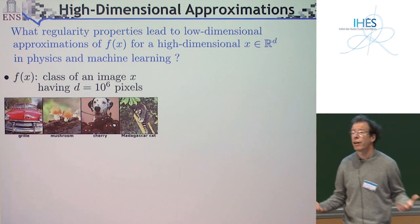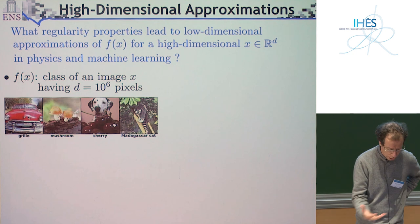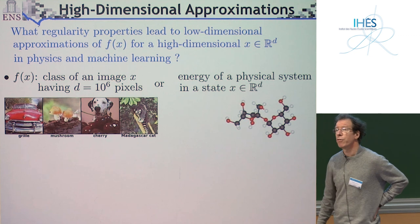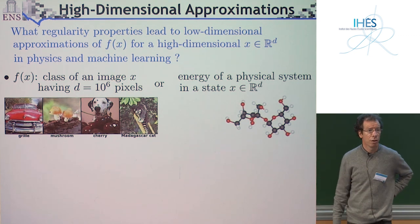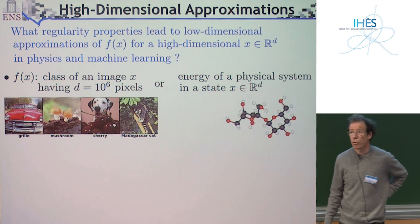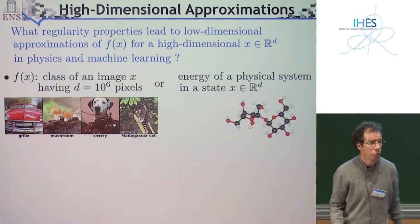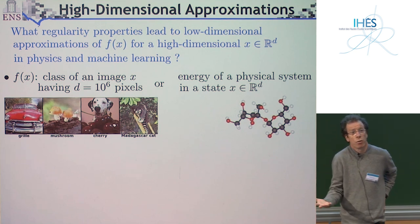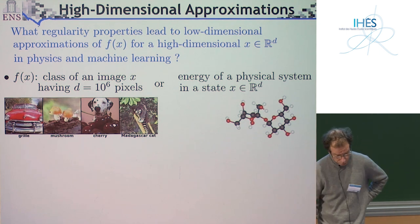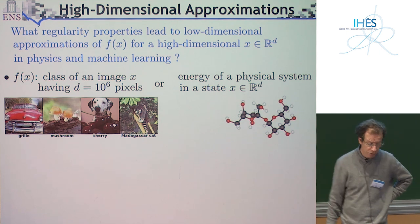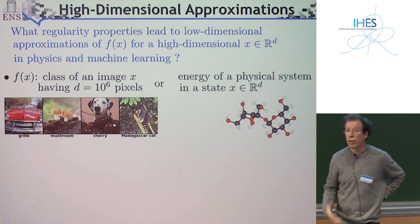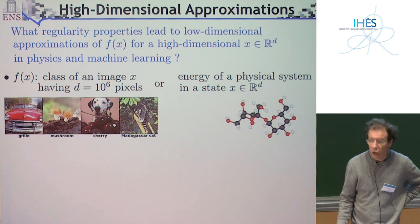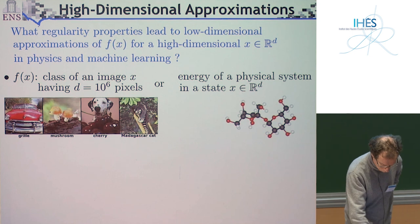X is a very complex high-dimensional vector such as an image. If you think of the same problem in physics, x will describe the state of the system. For example, in quantum chemistry, you would describe the geometry of a molecule, and what you'd like is to compute the energy. If you have access to the energy, you have access to the forces by computing the derivatives—basically the physical properties of the system. Can you learn physics by trying to approximate such a function given a limited amount of examples?